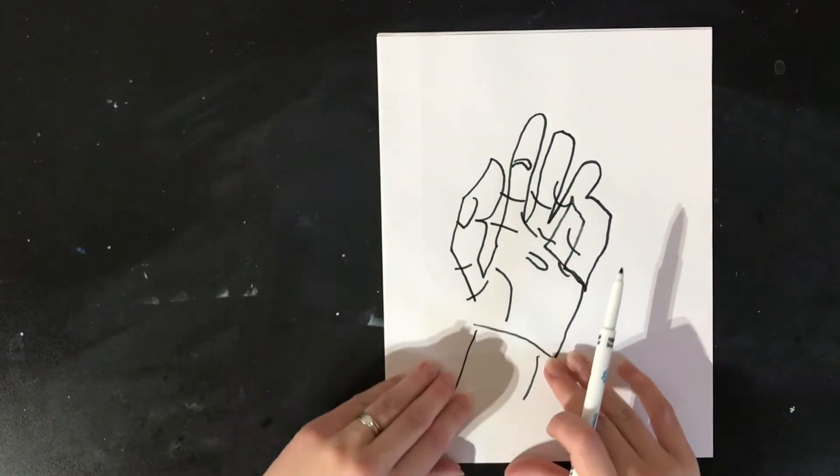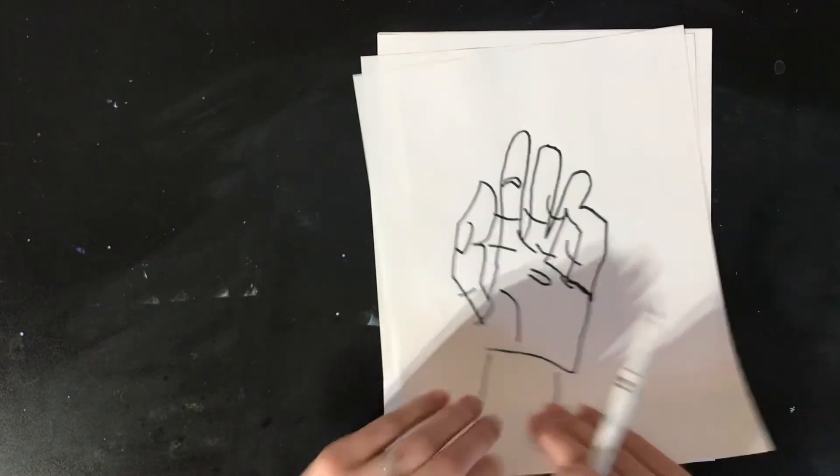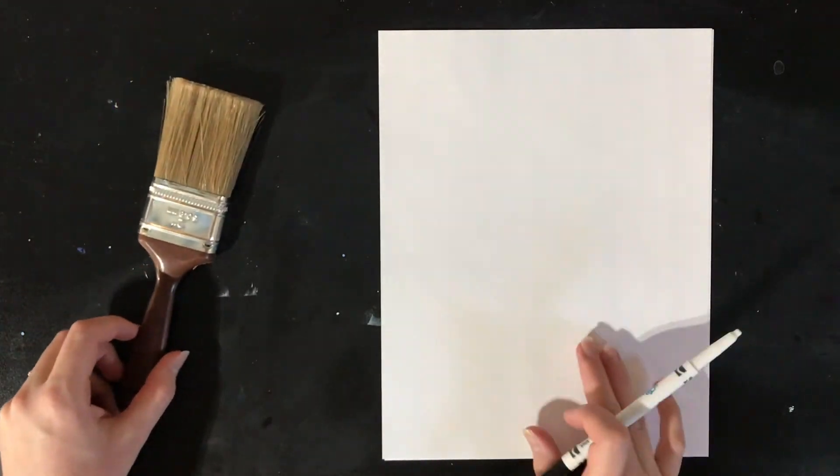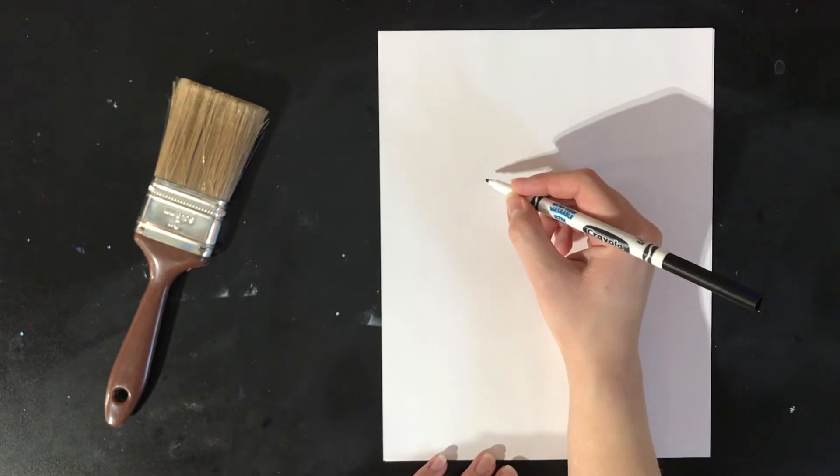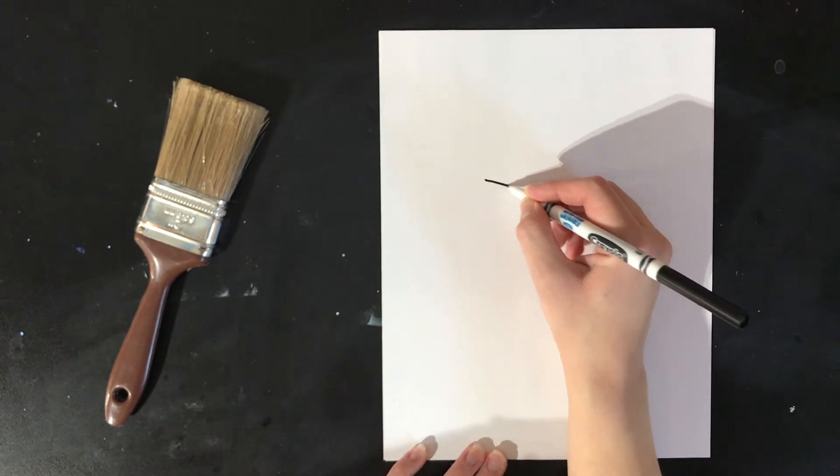Now if you don't want to draw your hand, you don't have to. You can draw a picture of anything you want like I can take one of my paint brushes and I can just look at that instead of my paper. I'm going to start trying to draw it.